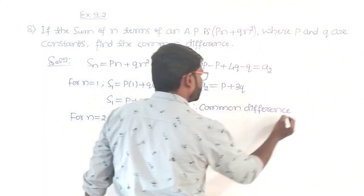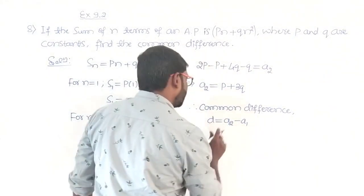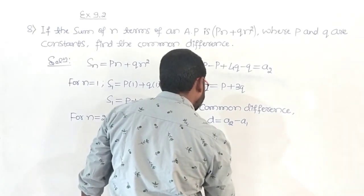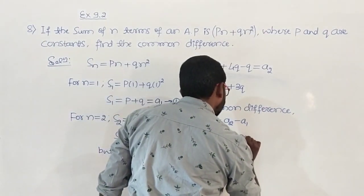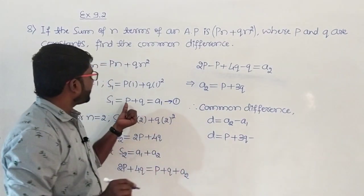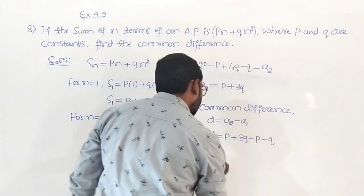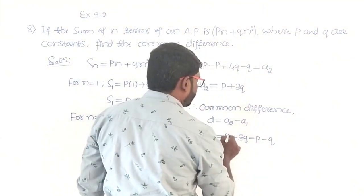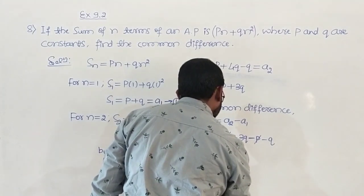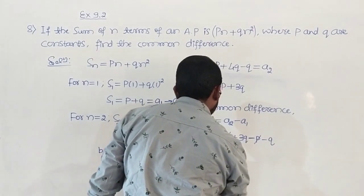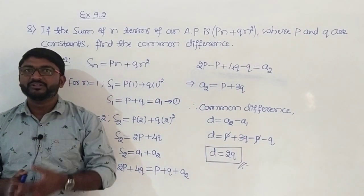Therefore, common difference d equals a2 minus a1. So d equals p plus 3q minus p minus q, which gives us d equals 3q minus q equals 2q. So 2q is the required common difference. Write down this and then we will move on to the ninth problem.